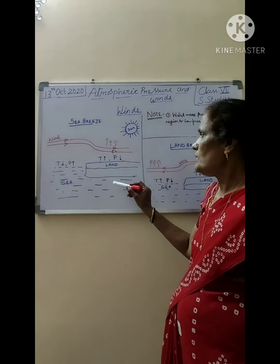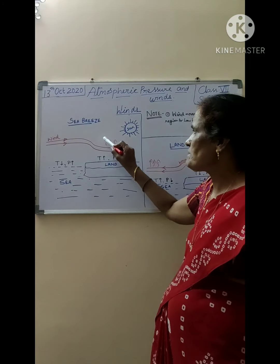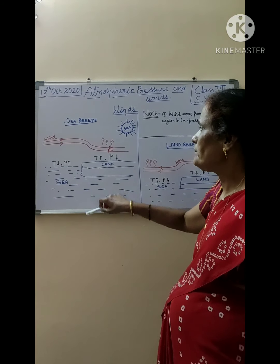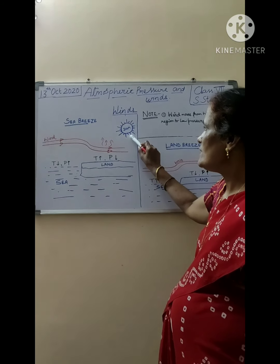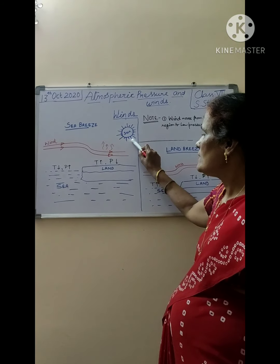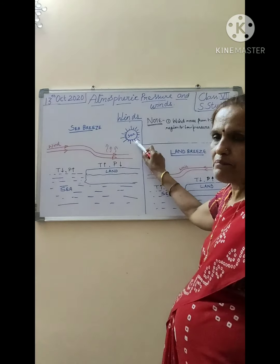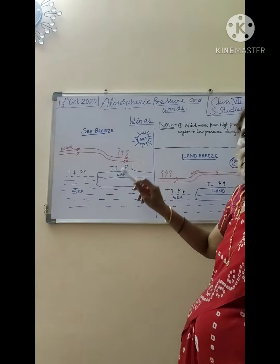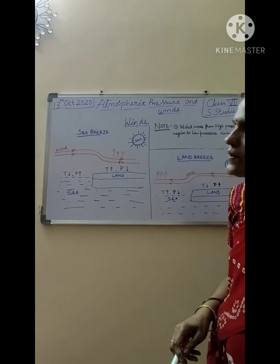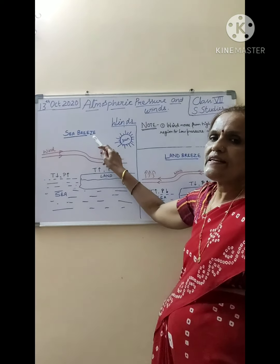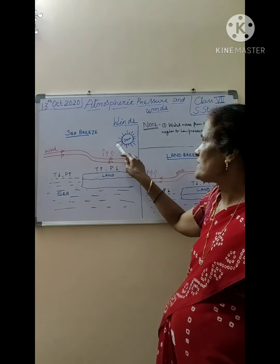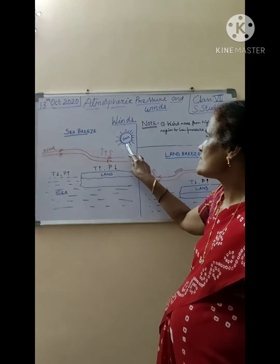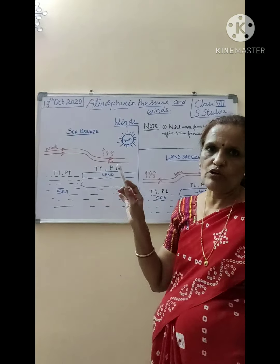Students, let me explain the diagram. This is a sea breeze diagram. You can see here the sun is shown, which means this takes place during the day. This is the diagram of sea breeze and it takes place in the daytime as we can see the sun. This is one of the key marks you need to understand.